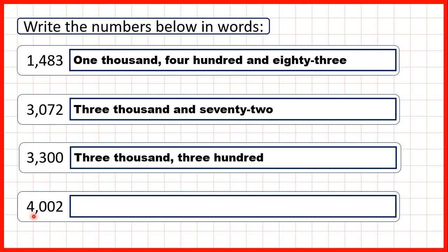And for this last number, we have four and then a comma, so that's four thousand. But then looking at the last three digits, we have zero, zero, two — so we have zeros in our hundreds and in our tens. We can just write 'and two' to give us the number four thousand and two.